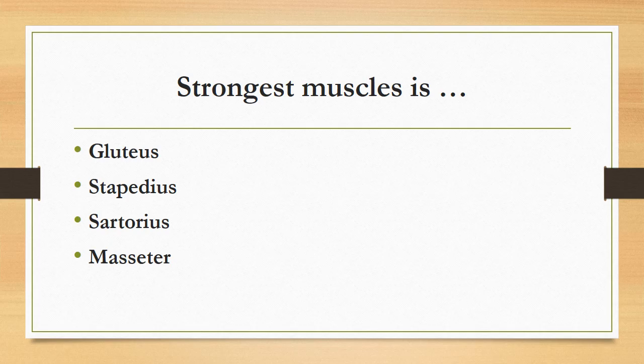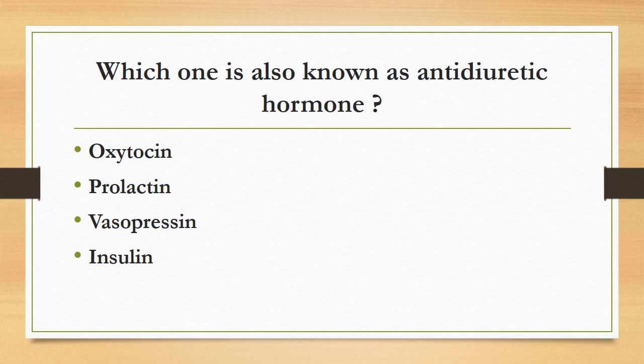The correct answer is masseter — masseter is the strongest muscle. The gluteus maximus is the largest muscle. The sartorius is the longest muscle. The stapedius is the smallest muscle, present in the ear.